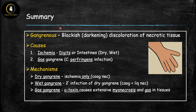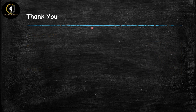Quick summary: gangrenous necrosis features blackish or darkened discoloration of necrotic tissue. There are two main causes: ischemia to the digits or GI tract — with dry gangrene (coagulative necrosis only) and wet gangrene (coagulative plus liquefactive necrosis from secondary infection) — and gas gangrene caused by Clostridium perfringens and its alpha toxin, leading to extensive myonecrosis and gas in the tissues. Check out the related videos linked here and search our channel Chalk Talk Med for other topics. Drop your thoughts in the comments — thanks for watching and see you next time.